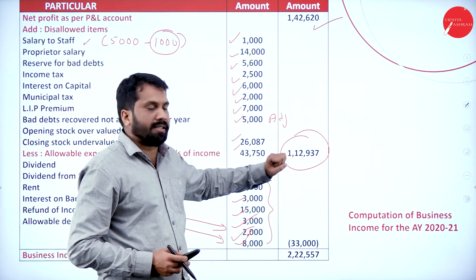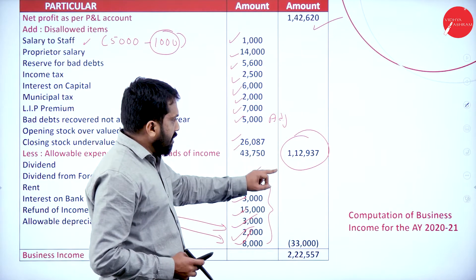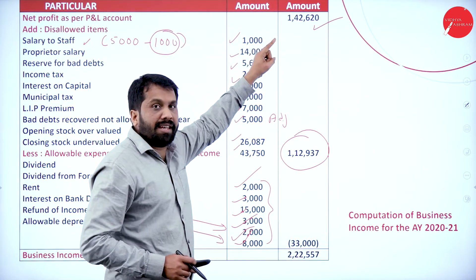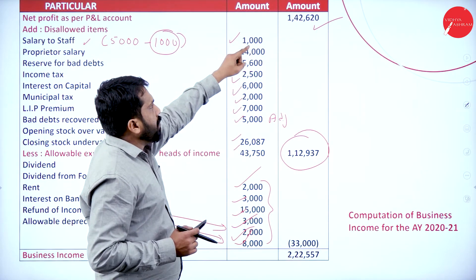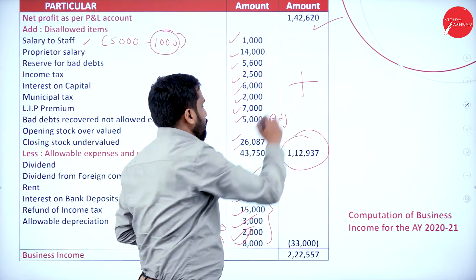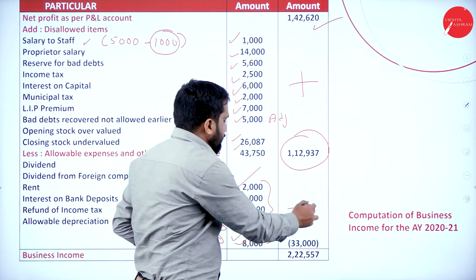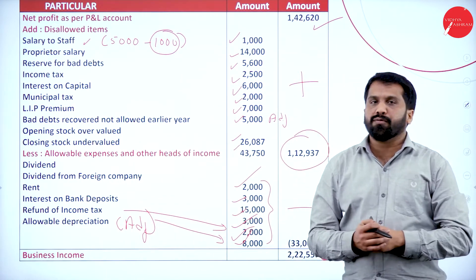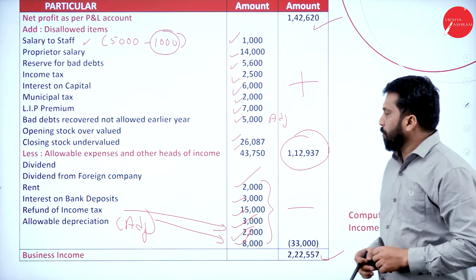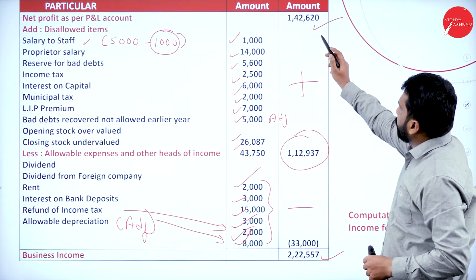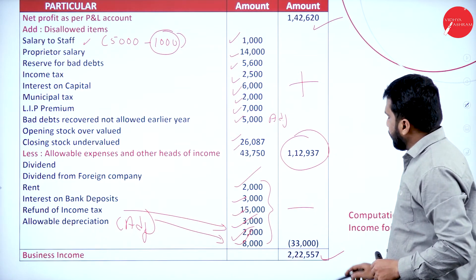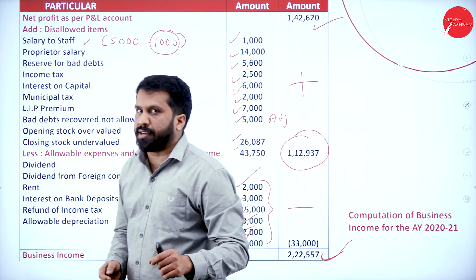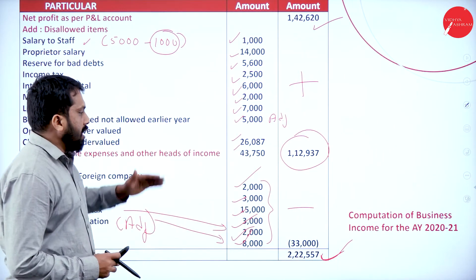Adding back all disallowed items totaling 1,12,937 and deducting allowed items of 33,000 from net profit of 1,42,620: 1,42,620 plus 1,12,937 minus 33,000 gives a final taxable business income of 2,22,557. This is the computed taxable income from business.